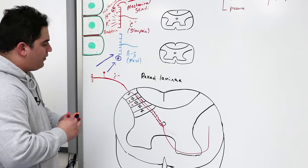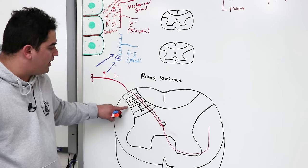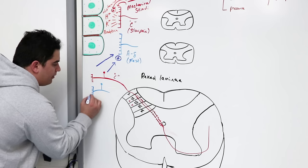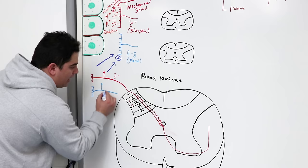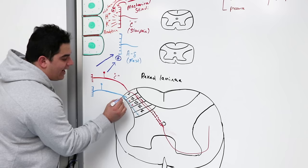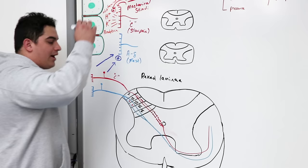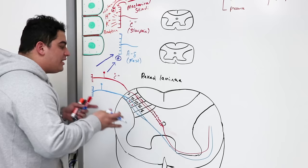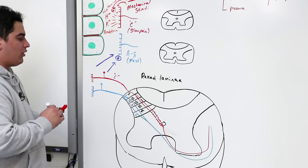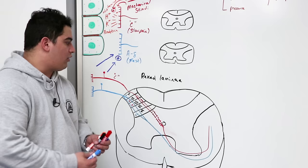For A-delta fibers, lamina 1 is called the marginal nucleus and lamina 5 is the reticular nucleus. These fibers also cross over through the anterior white commissure and go up into the anterolateral system. For crude touch fibers — same concept — peripheral process, pseudo-unipolar neuron, central process — they believe it can go to laminae 3, 4, or 5. These then cross over through the anterior white commissure, but come a bit more anteriorly — situated within the ventral or anterior white column — and ascend.